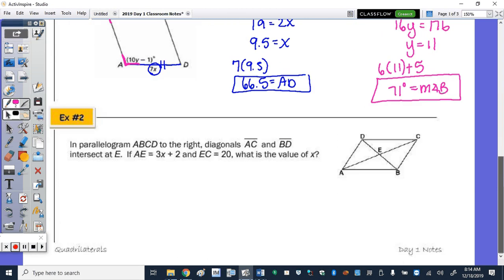Alright, number 2. We have parallelogram ABCD with the diagonals drawn. If AE, so AE is part of diagonal AC, is 3x plus 2. And EC, which is the other part of that diagonal, is 20. What is the value of x?